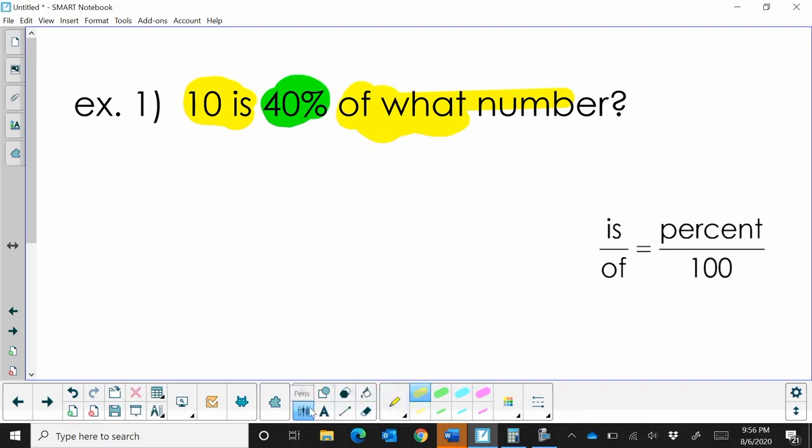Okay, so now let's set this up into our proportion here. So 'is' is going to be on top, and that value is 10. 'Of' is going to be on the bottom, and we don't know that number, so we're going to write that as the variable x.